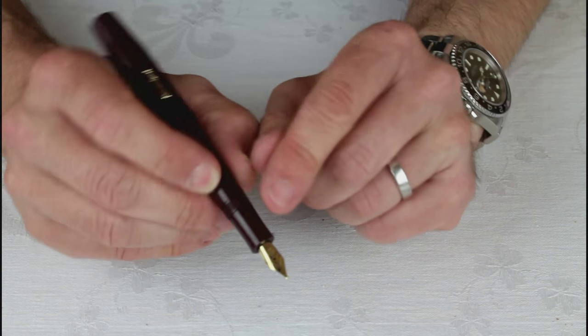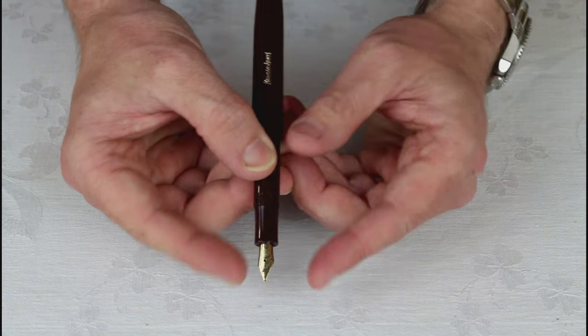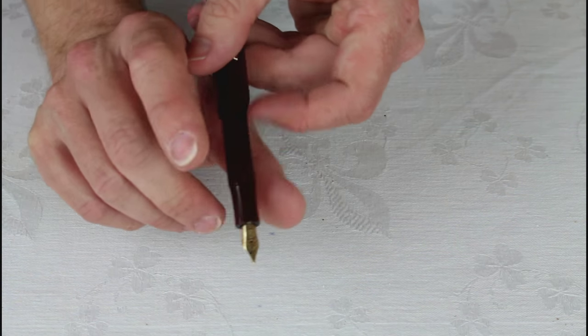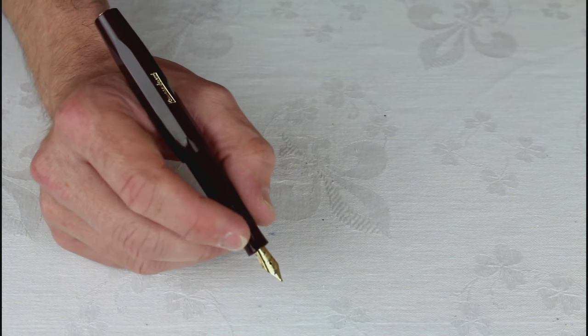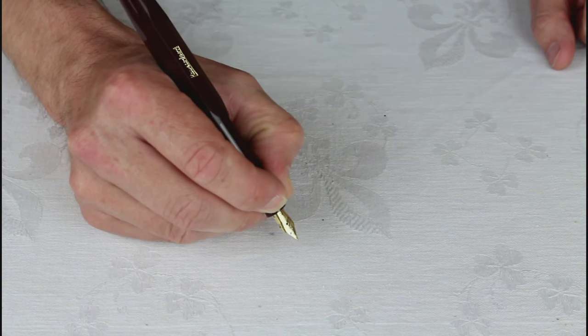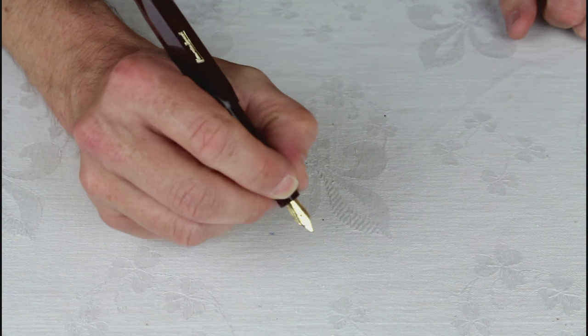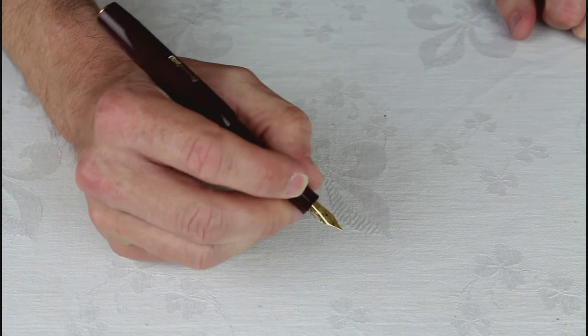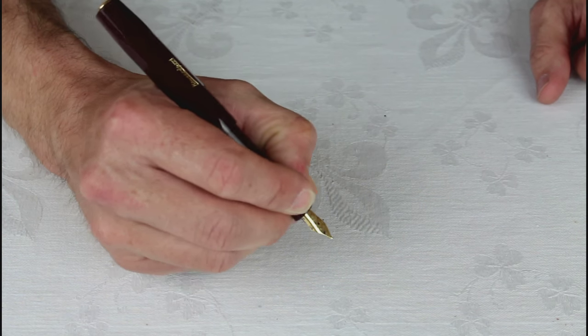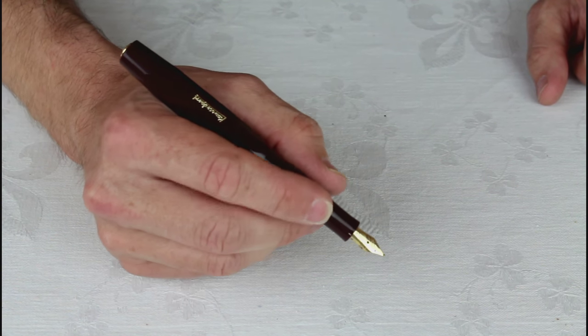The only comment I would have is that the nib is really quite petite, not only in breadth, so this is a medium, I think it writes like a true medium, but really in length. So your hand position could be quite close to the paper. It doesn't quite feel right to me. The section's very narrow to be honest, and sort of next down. So if you hold it like it's designed to be held, you put your hand quite close to the paper there.